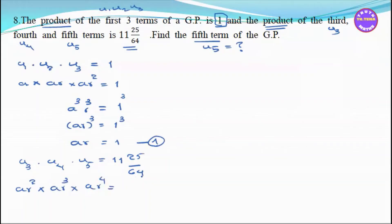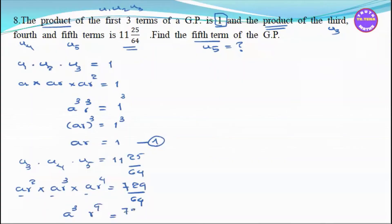Similarly, U3 × U4 × U5 = (a·r²)(a·r³)(a·r⁴) = a³·r⁹ = (a·r³)³ = U4³. So a³·r² × a·r² × a·r⁴ = a power nine equal to 729/64.